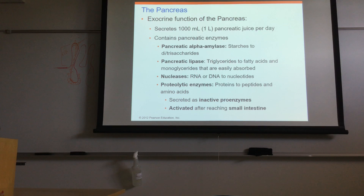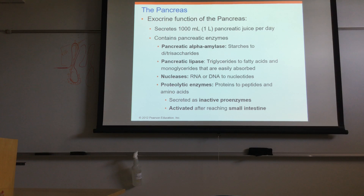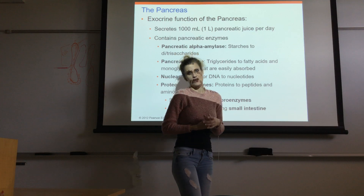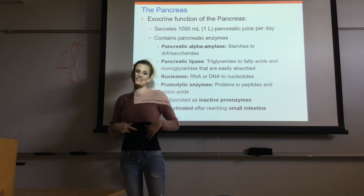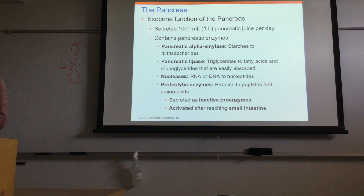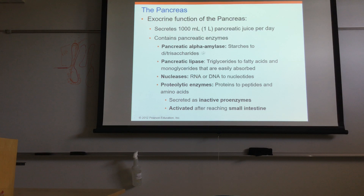The pancreas releases about one liter — one thousand milliliters — of fluid into the duodenum. To put that in perspective: saliva contributes about one and a half liters, the stomach adds another liter and a half, the small intestine adds two liters, and the pancreas adds another liter. That's a tremendous amount of fluid, which shows how extremely important water is for digestion. Pancreatic juice is mostly water.